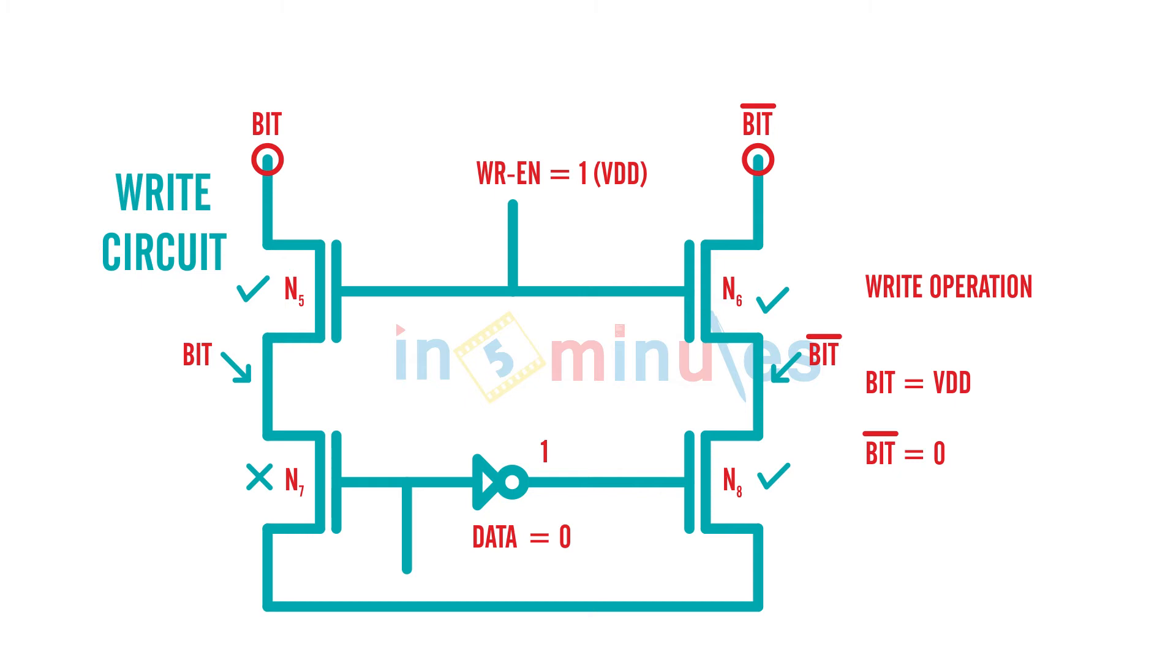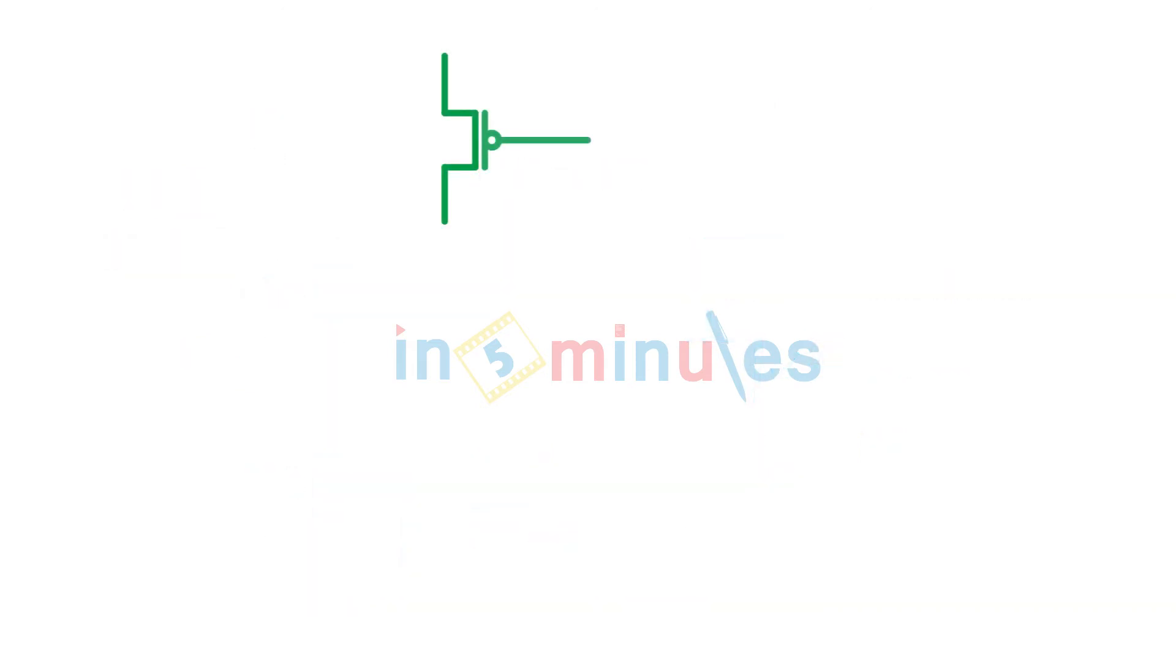Is it confusing? If it is, let's understand the whole circuit and then it becomes very simple. Remember the diagram - N5, N6, write enable on turns on and will pass whatever is present. In simple words, this is what is happening. This is my precharge circuit.